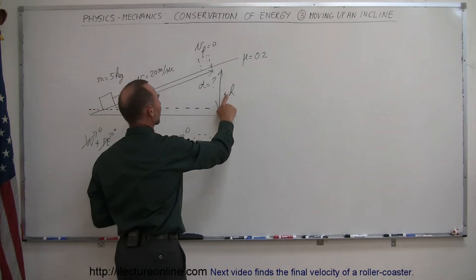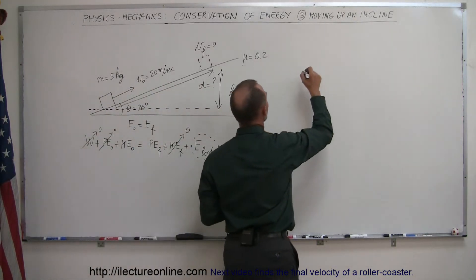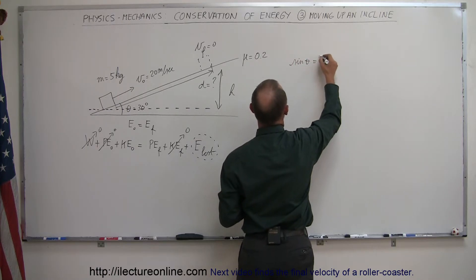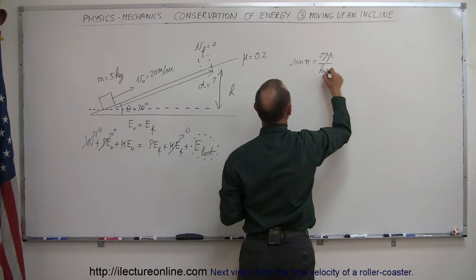And I don't have to write delta H. I can simply just say H. And we can then say that the definition of the sine of theta is equal to the ratio of the opposite side over the hypotenuse.